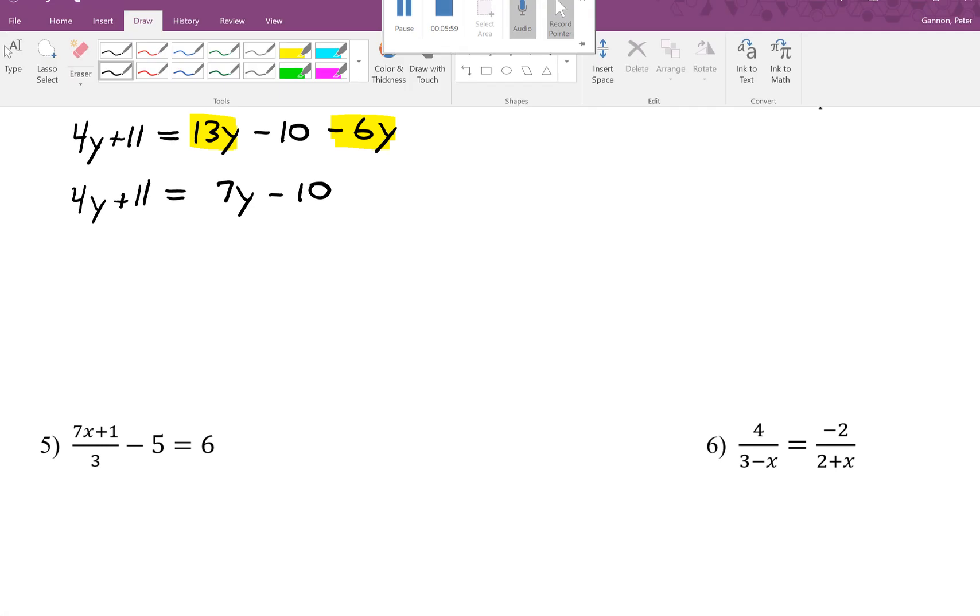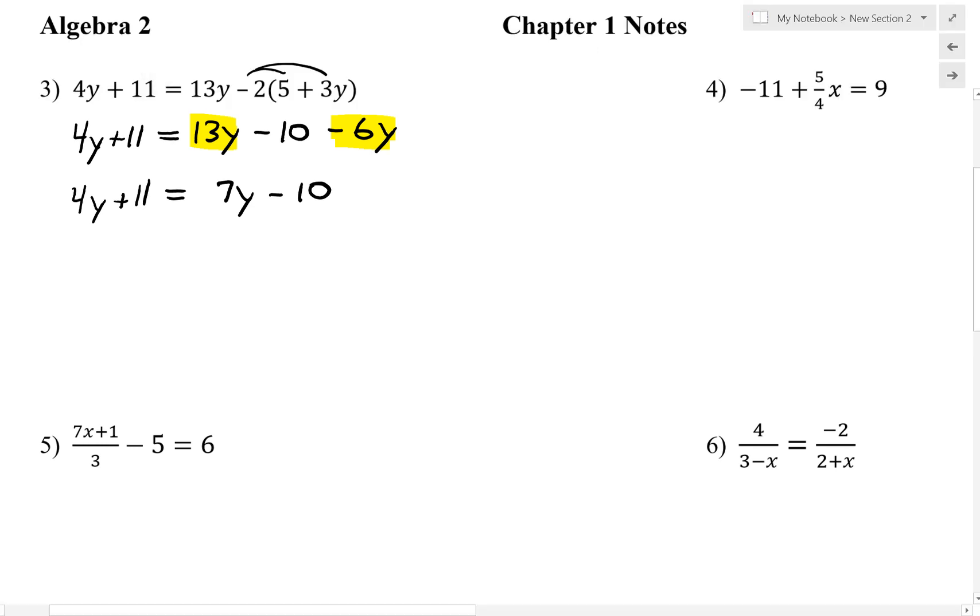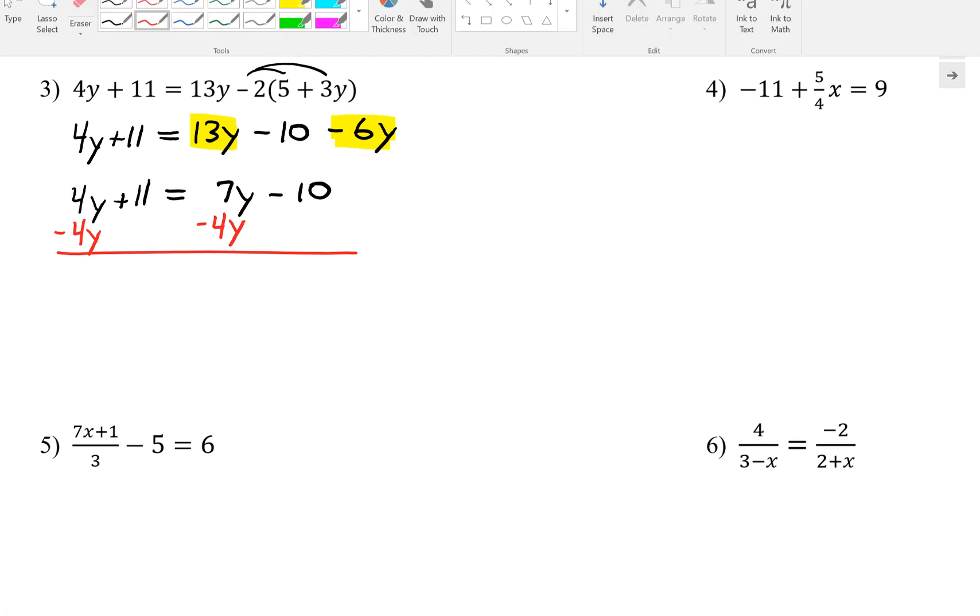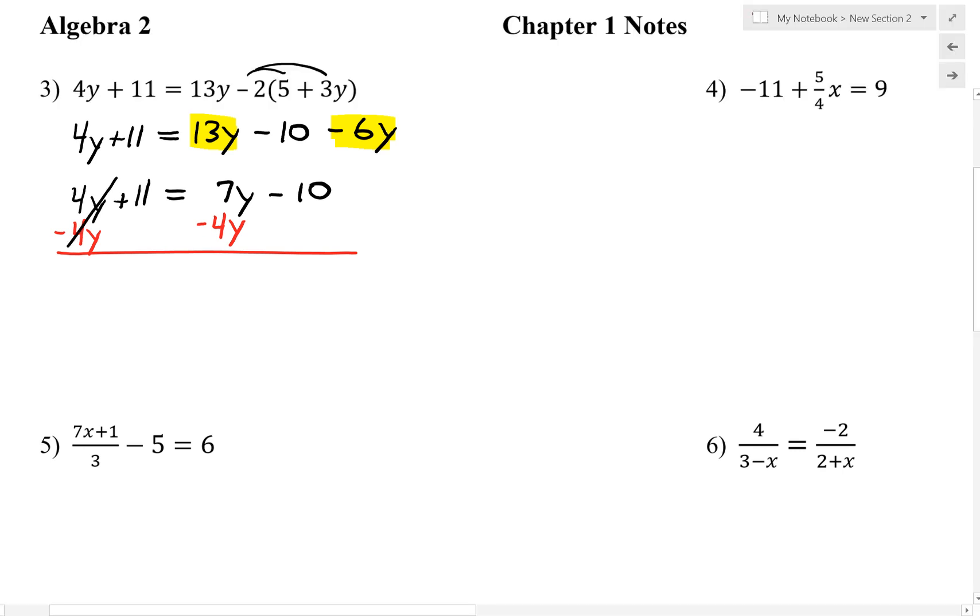What's different here is now we have variables on both sides of the equation. Both sides are simplified, but we have variables on both sides. So we want to move variables to one side. It doesn't really matter which side you move to. I like to try to keep the variable positive. So I'm going to move the 4y over to the 7y. I'm going to do that by subtracting. At that point, we're going to cancel the 4y's over here. We have 11 equals 7y minus 4y is 3y minus 10.